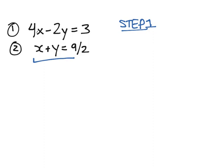And we can choose either one of the variables. It works either way. So, say x is equal to 9 over 2 minus y. We subtract y from both sides of the equation. So, now we've got x in terms of y.